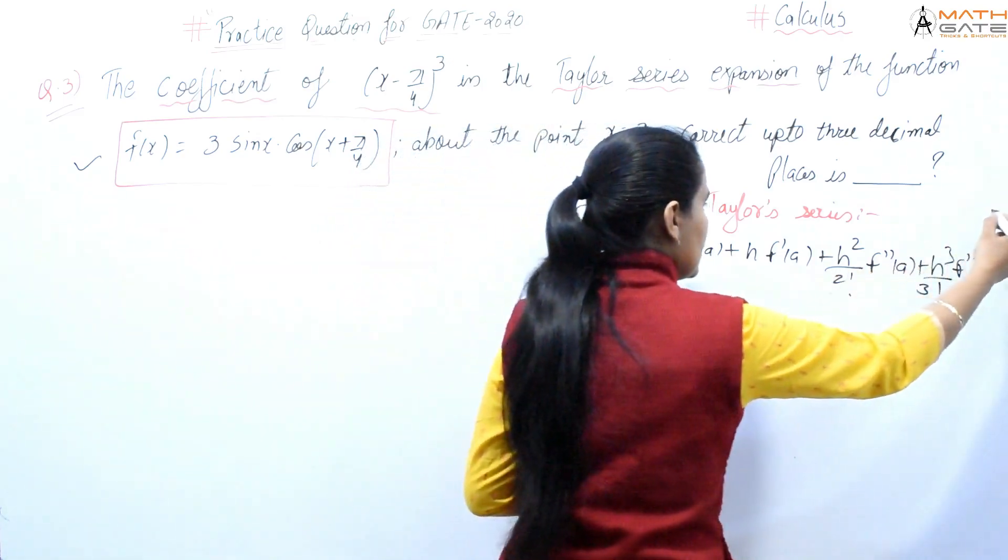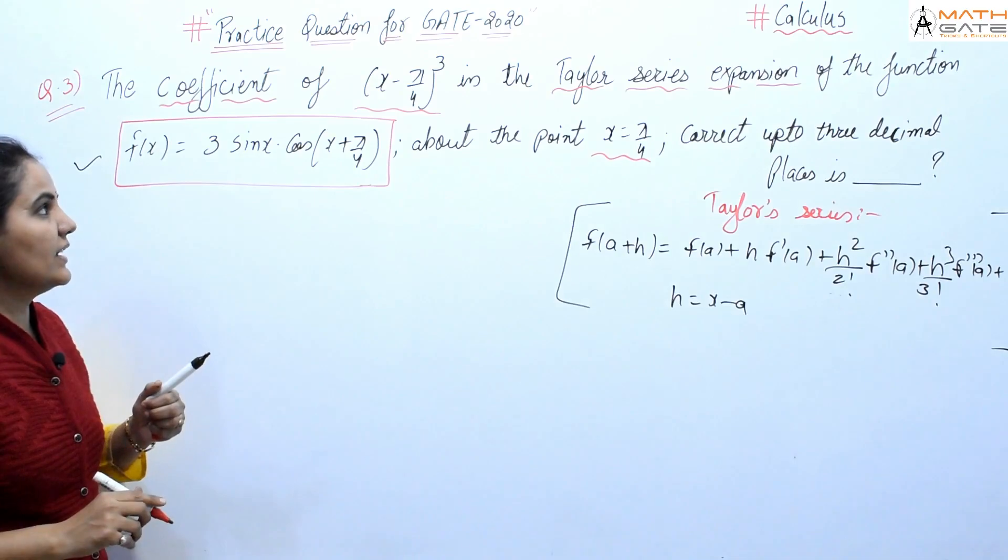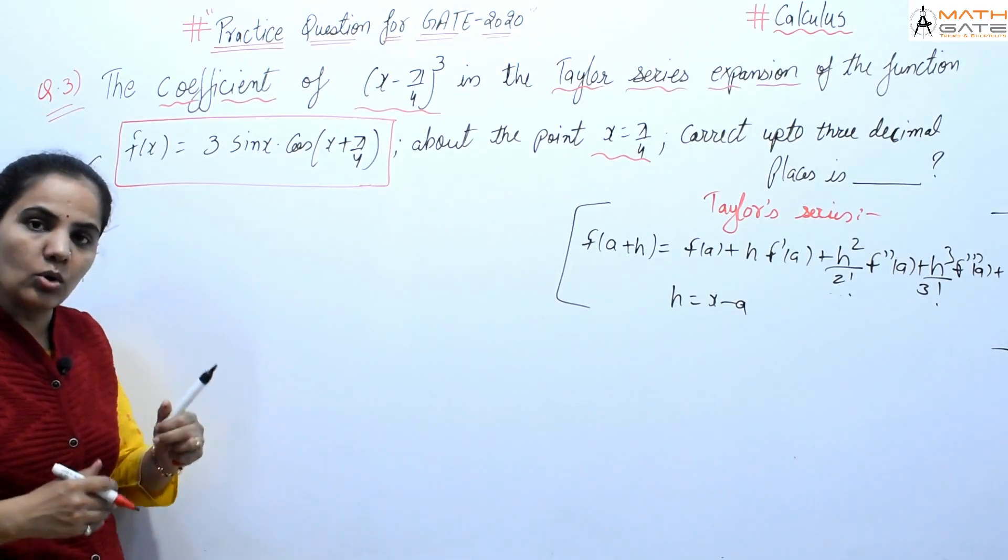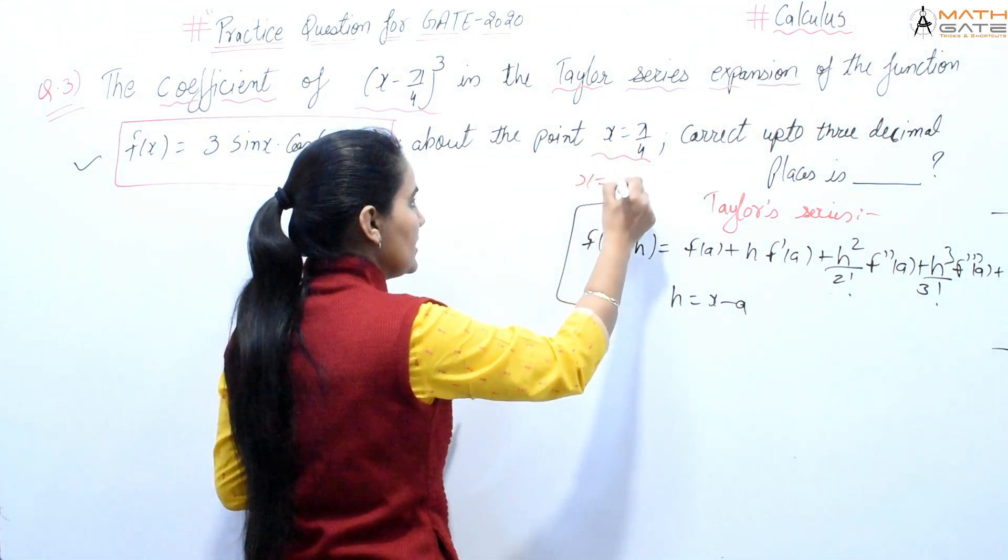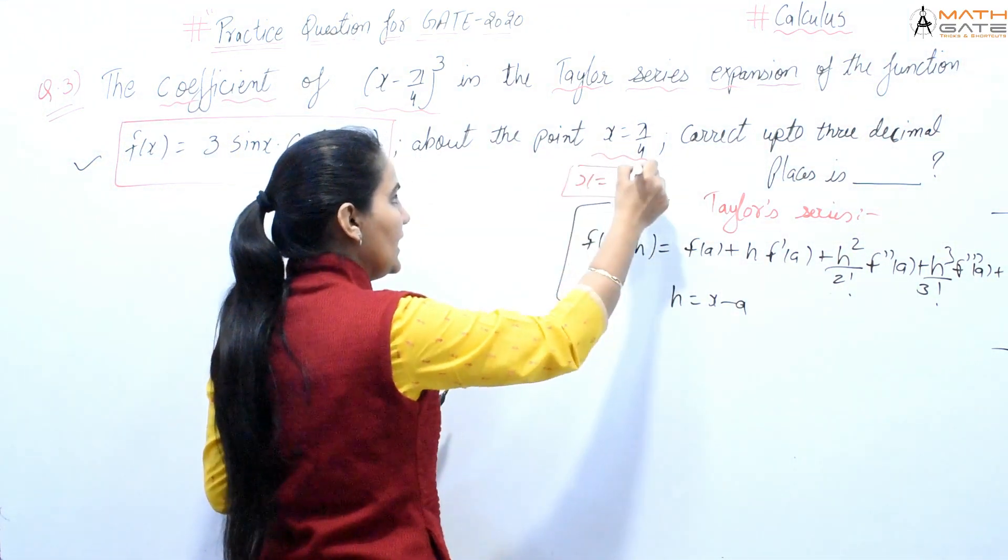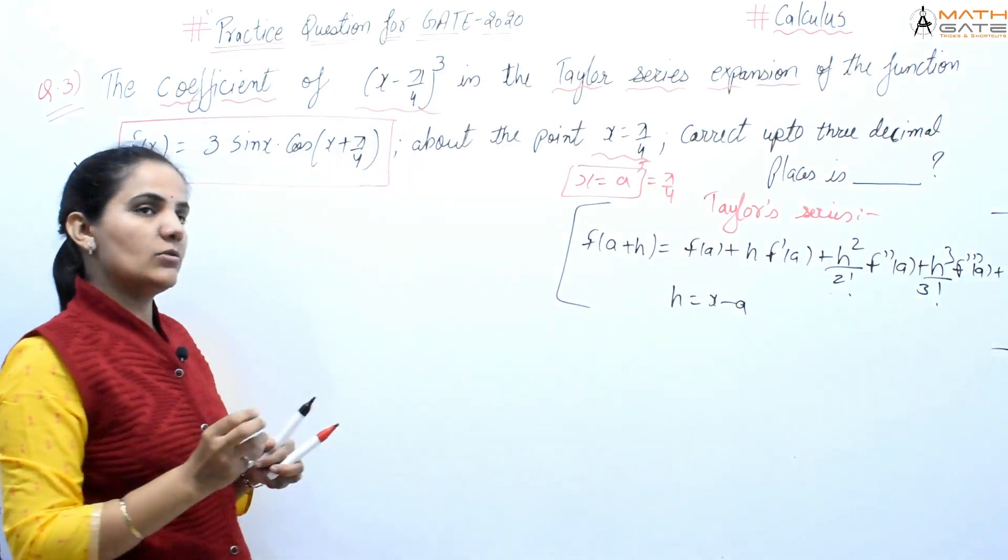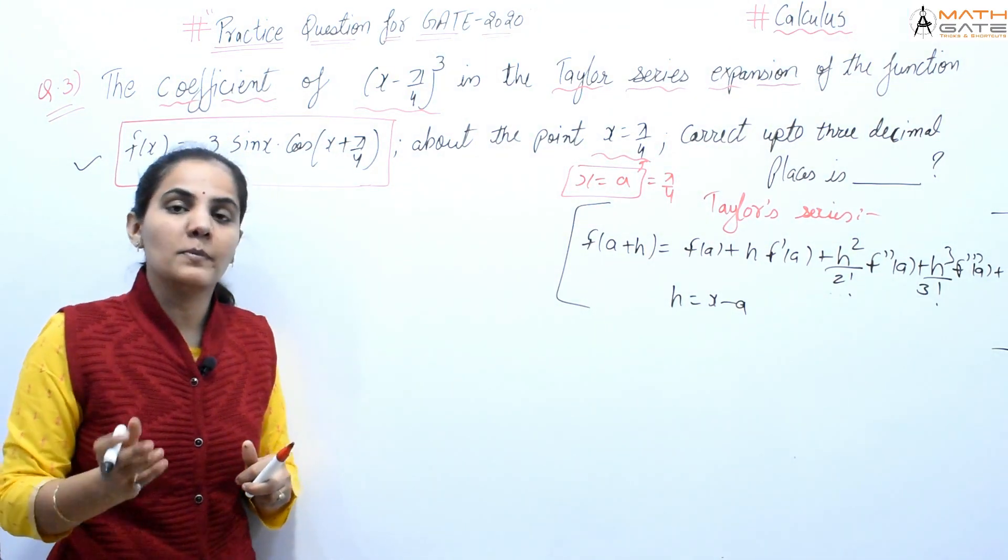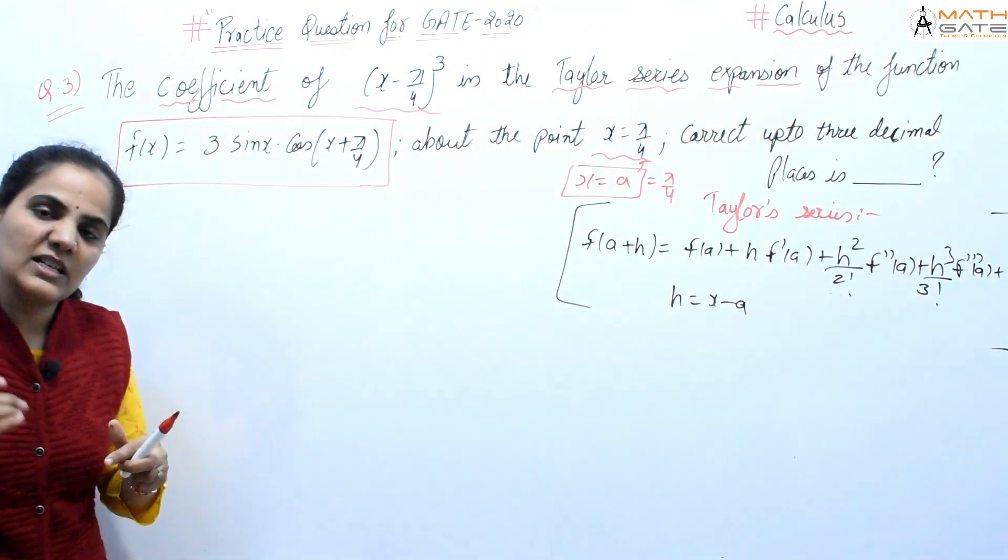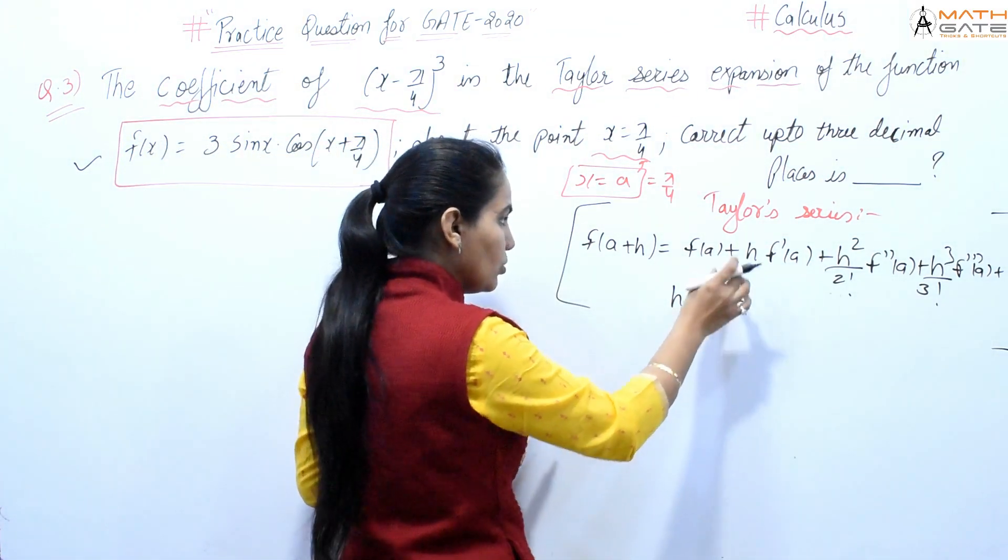This is the standard form of Taylor series. We need to find the coefficient of (x - π/4)³. The given point is x = a, which means a = π/4. So we need the coefficient of (x - π/4)³ in the expansion.